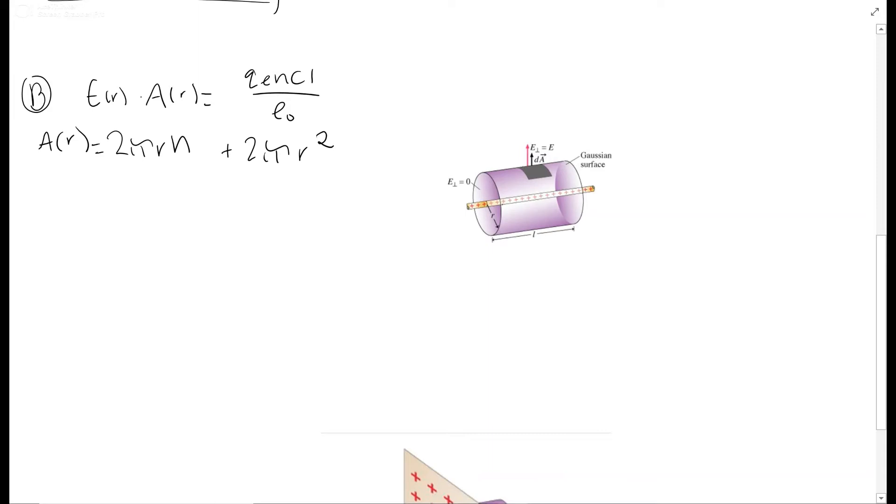However, in this case, the electric field is coming from this wire and it's pointing out of the wire in all directions. So these ends are actually parallel to the electric field, so there's no flux. So we don't have to look at them.